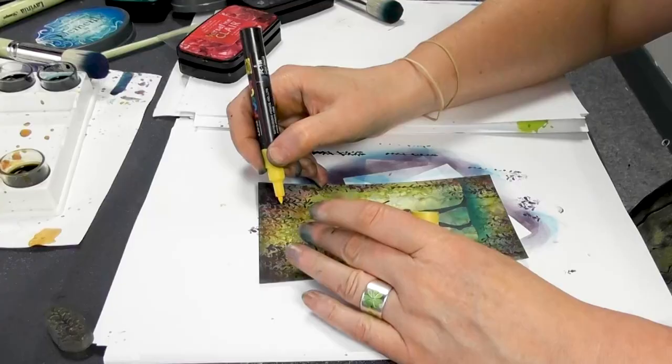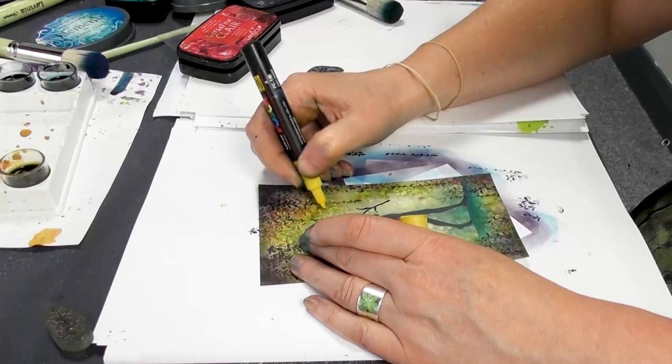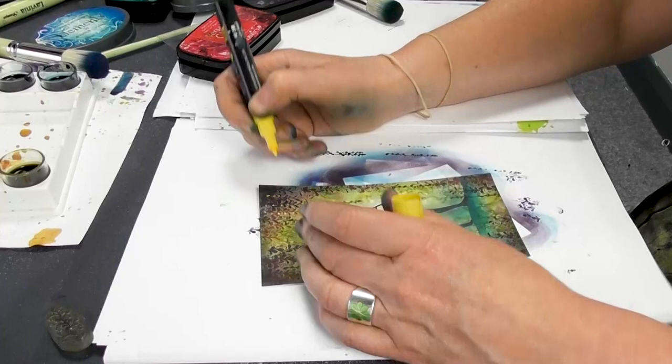So using my Posca pen now, I'm going to just dot down, following the foliage.